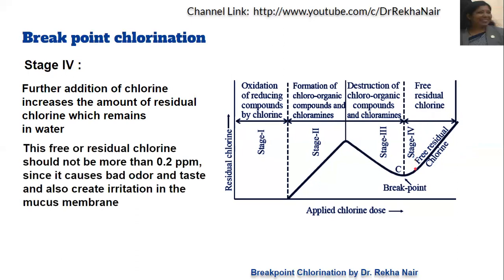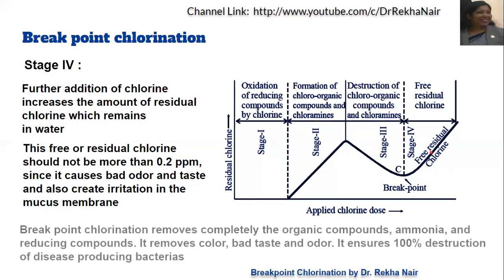This free residual chlorine should not be present in excessive amounts — it should be in the range of about 0.1 to 0.2 ppm only, because more than that causes bad odor and taste and also creates irritation in the mucous membrane. In summary, breakpoint chlorination completely removes organic compounds, ammonia, all reducing compounds, color, bad taste, odor, and all bacteria and germs — giving 100% destruction of all disease-producing bacteria and other compounds.